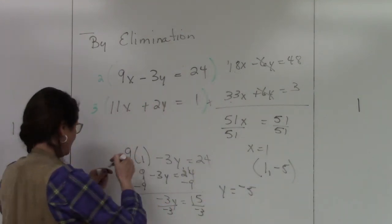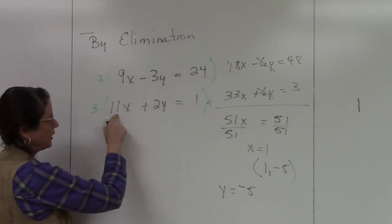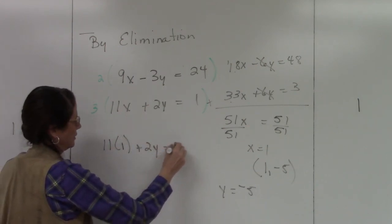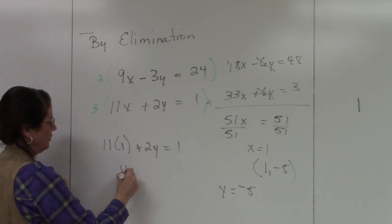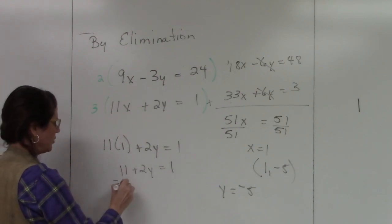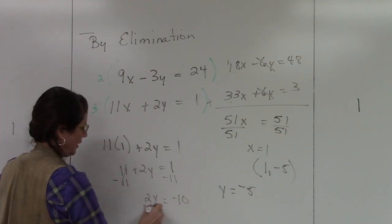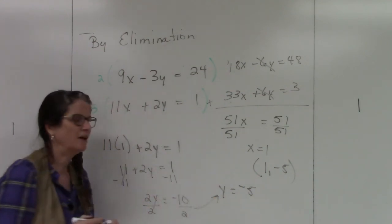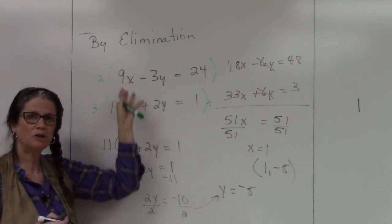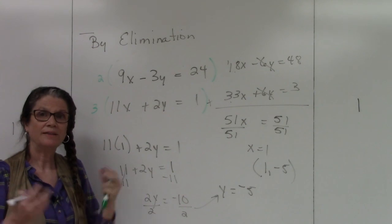Now if I plugged it into the other one, I'll show you I'm going to get the exact same answer. You'll see I'll get negative 5. So if I plug my x equals 1 back into the second one, 11 times 1 is 11, plus 2y equals 1. I'm going to subtract 11 from both sides, so I get 2y equals negative 10. Divide both sides by 2, and I still get y equals negative 5. So that just shows you can do either one, doesn't matter which equation you plug it back into, as long as you plug it back into the original one. You'll be good to go. And that's elimination.